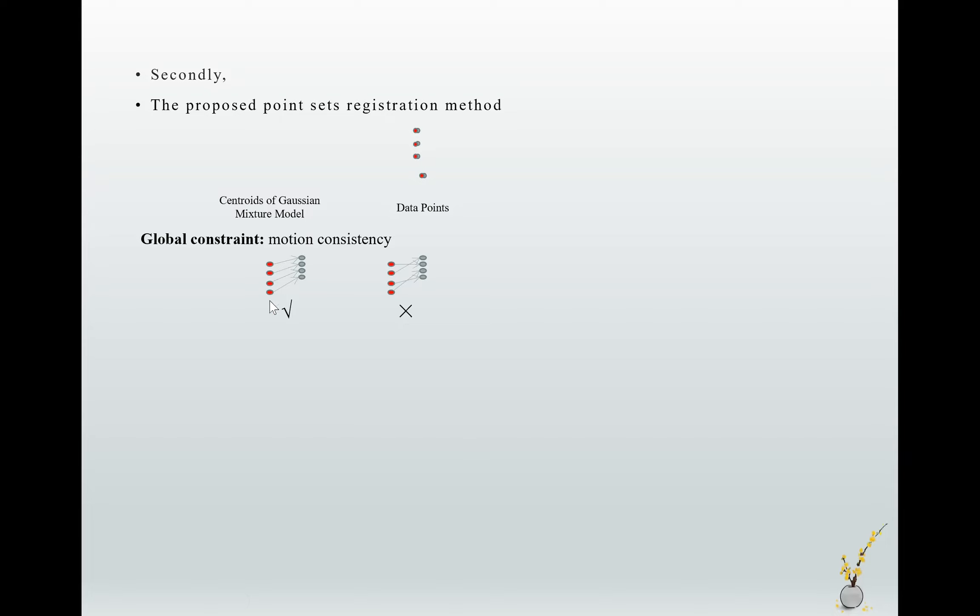You can imagine if there is an object, and these red points are the sampling points on this object. And this object moves from here to here, and these points will move together. Their trajectory will not be like this way, it's not natural. This is the first constraint.